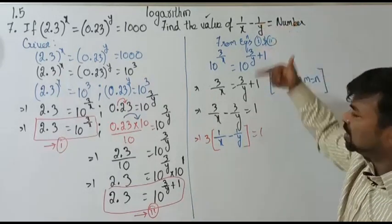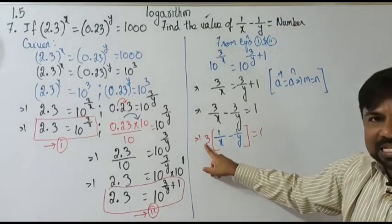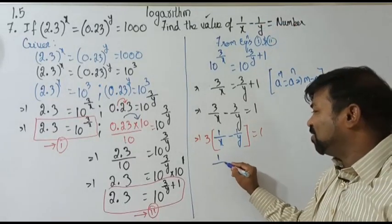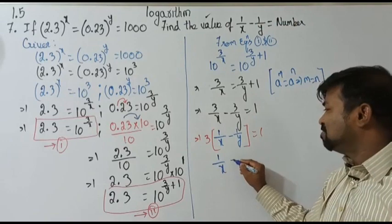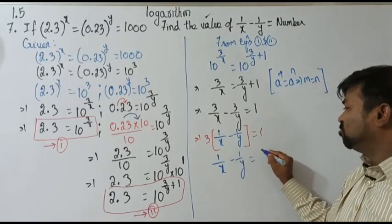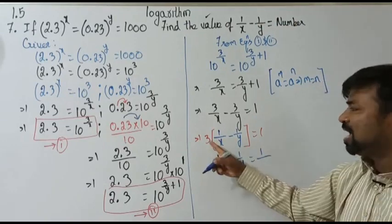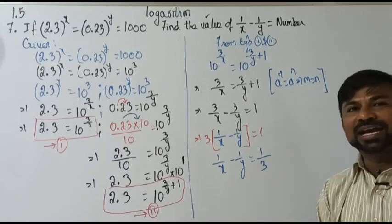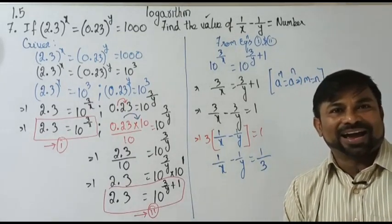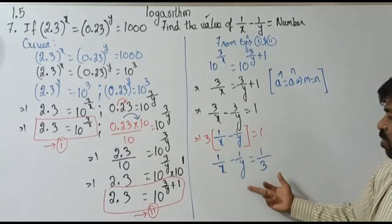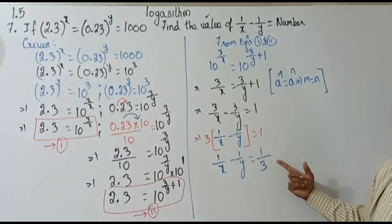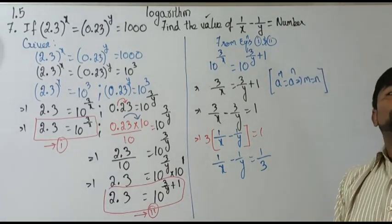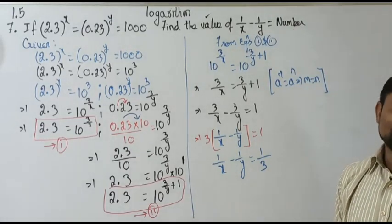Shall I send this 3 to the other side? Yes. So 1 by x minus 1 by y equals 1 by 3. As it is multiplying, if it goes to the other side it divides. So 1 by x minus 1 by y — the value I got is nothing but 1 by 3. Thank you.